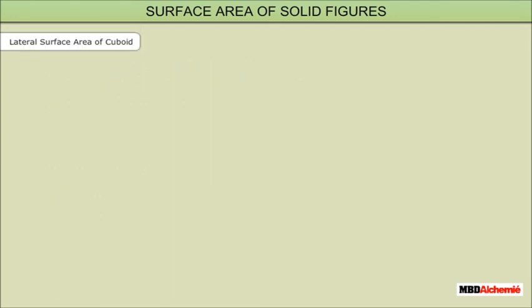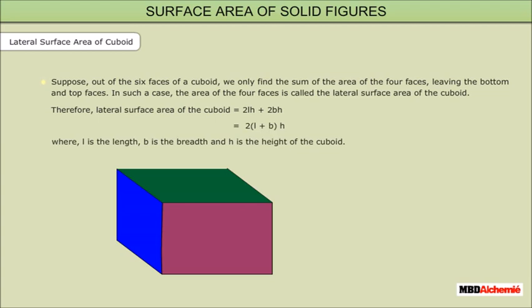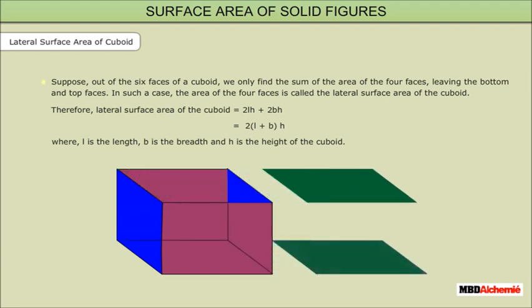Lateral surface area of the cuboid: out of the six faces of a cuboid, if we only find the sum of the area of the four faces leaving the bottom and top faces, the area of those four faces is called the lateral surface area of the cuboid. Therefore, the lateral surface area of the cuboid is 2LH + 2BH = 2(L + B) × H, where L is the length, B is the breadth, and H is the height of the cuboid. In the animation, when the top and bottom faces of a cuboid are removed, the remaining surface area is the lateral surface area.